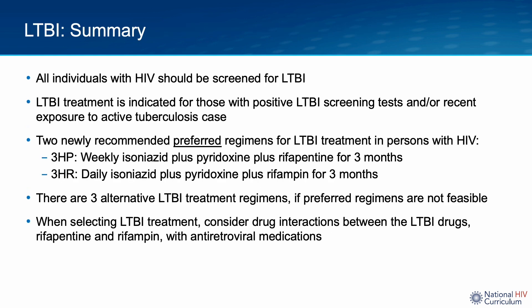In summary, all persons with HIV warrant LTBI screening. LTBI treatment is indicated if the screening test is positive or if the patient has had recent close contact with an active TB case. The two newly recommended preferred LTBI treatment regimens are 3-HP — weekly isoniazid plus rifapentine for three months — or 3-HR — daily isoniazid plus rifampin for three months. If these preferred regimens are not feasible, the OI guidelines list three alternative LTBI treatments. As a clinical provider, there is no one-size-fits-all approach; I tailor my decision, which may include modifications to either the LTBI treatment plan or antiretroviral regimen, based on patient-specific circumstances, paying very close attention to drug interactions.